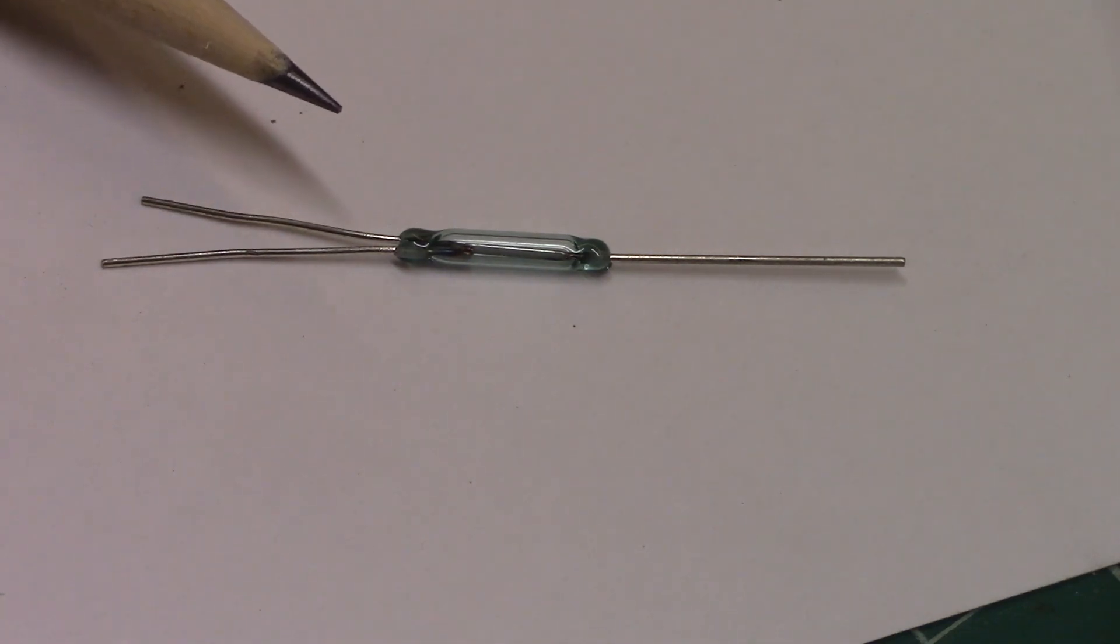Now a reed switch has two little contacts in here and it is activated by being in the presence of a magnet.